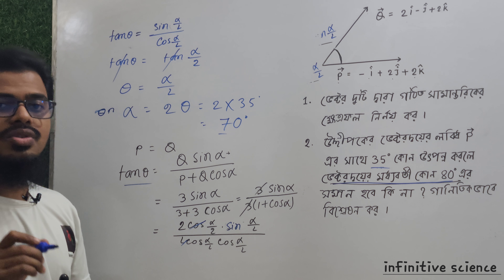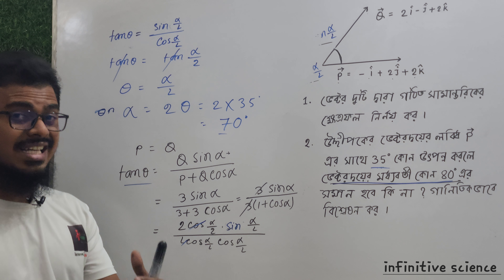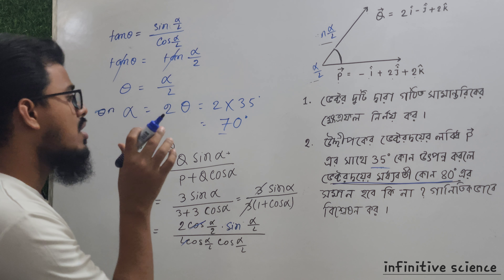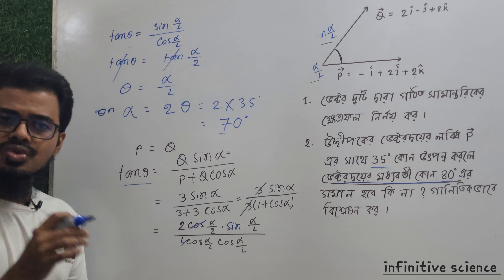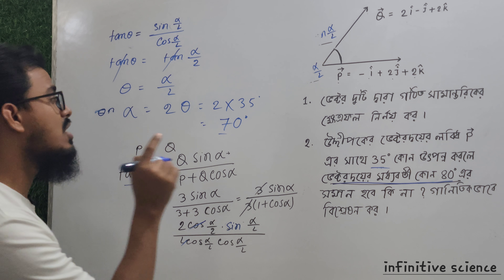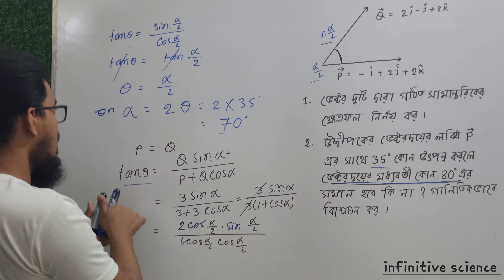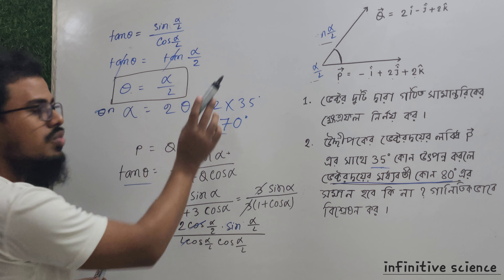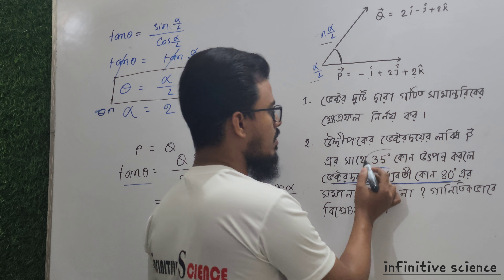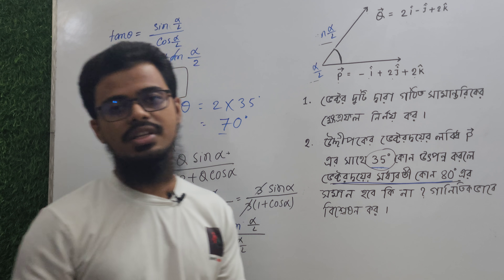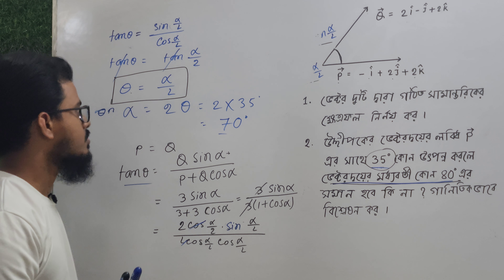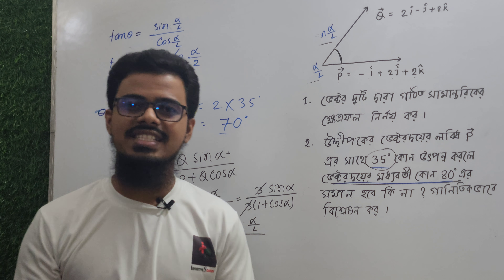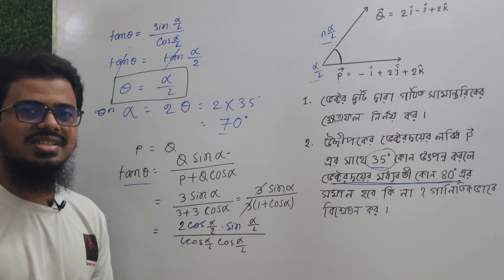So the answer is that the two vectors make a 70 degree angle — because theta equals alpha by two, and alpha equals 2 into 35 degrees equals 70 degrees. Both the vector man and someone direction confirm this. Therefore the angle between the two vectors is 70 degrees. Assalamualaikum.